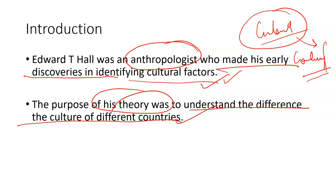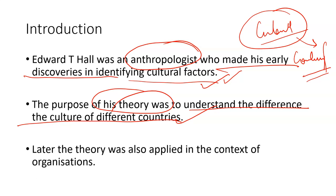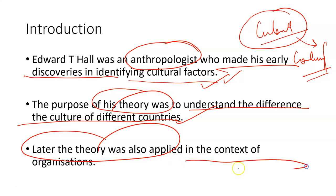The objective of this theory was to understand the difference between the cultures of different countries. For example, India's culture is different from Japan, Japan's culture is different from the US, and the US culture is different from Korea. He was very interested to understand why these differences exist and on what factors they differentiate. Later, this theory was also applied to the context of organizations.